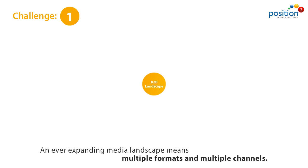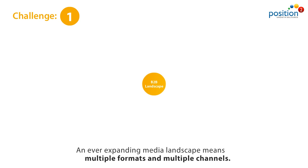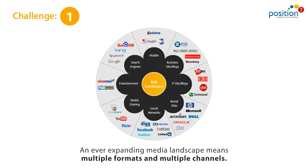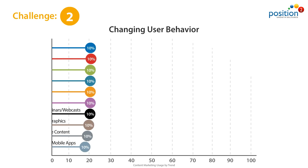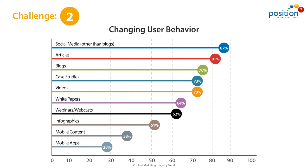In an ever-expanding media landscape, you need to have your content in multiple formats, across multiple channels, each with its own set of best practices. Too often, users rely on content across channels and in formats that are convenient. For example, a video summary of a white paper is preferred to a white paper that has only text.